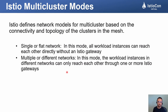Istio multi-cluster network modes are defined based on the topology and connectivity of the underlying Kubernetes cluster. Single or flat network refers to a topology in which all workloads can reach each other directly using their IP addresses. Multiple or different networks refers to a topology in which workloads are not directly reachable to each other but are accessible using one or more Istio gateways. Istio is not a CNI, so it is up to us how to design and pick the right networking topology that can solve our multi-cluster networking problems.